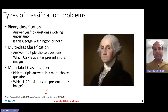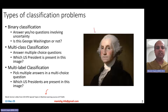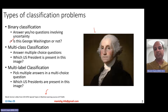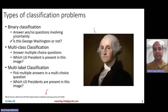What is extreme classification? All of us understand classification, so if I give you this picture and ask you a simple question — is this George Washington or not? — that's basically a binary classification problem: answering yes-no questions involving some uncertainty, and that is why you need some classifier.